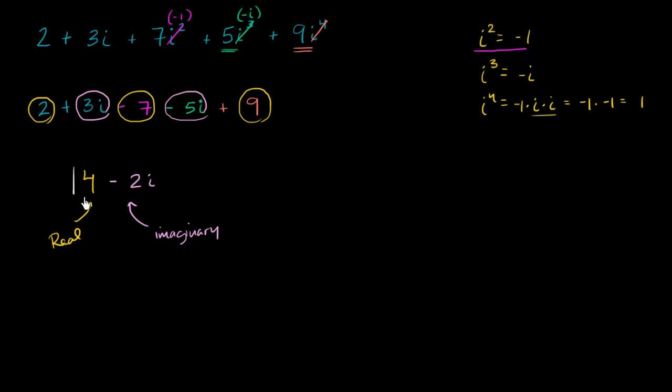So this is a number that has a real part and an imaginary part. And numbers like this, we call complex numbers. It is a complex number. Why is it complex?